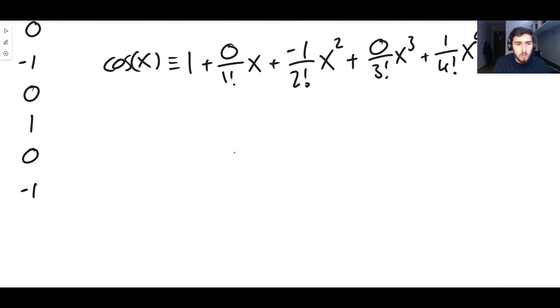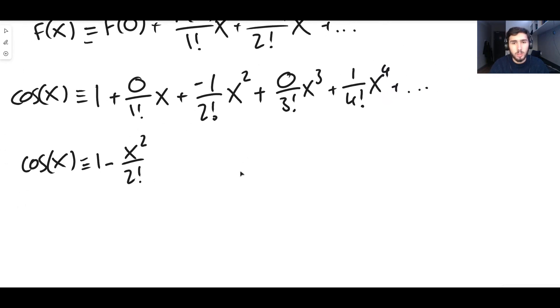And if we tidy this thing up, what you get is cos x equals one minus x squared over two factorial plus one over four factorial x to the four. You can see here what the pattern is. It's one times x to the zero because x to the zero is one divided by zero factorial which is one. And then notice how all of the powers of x are just even numbers.